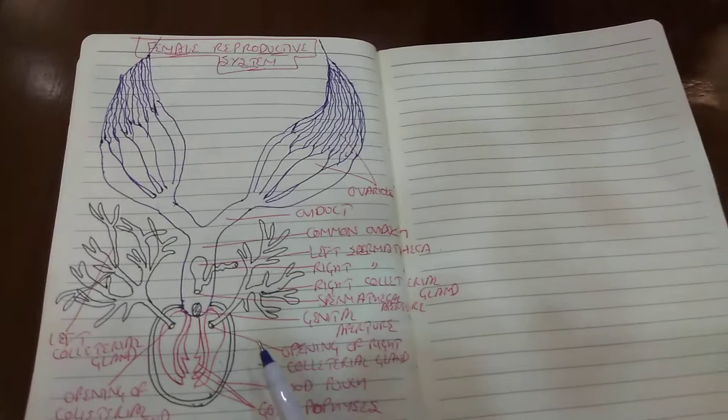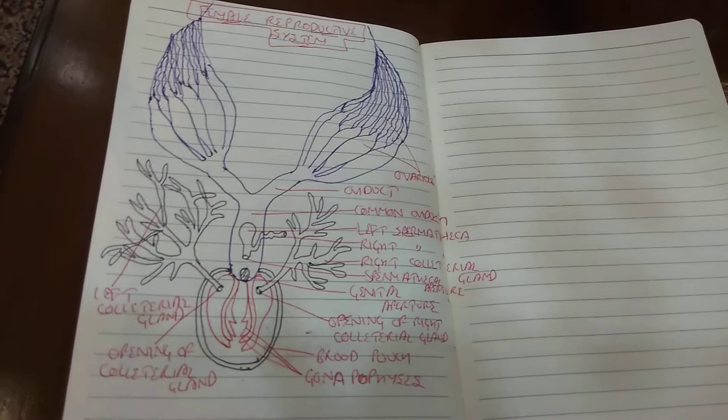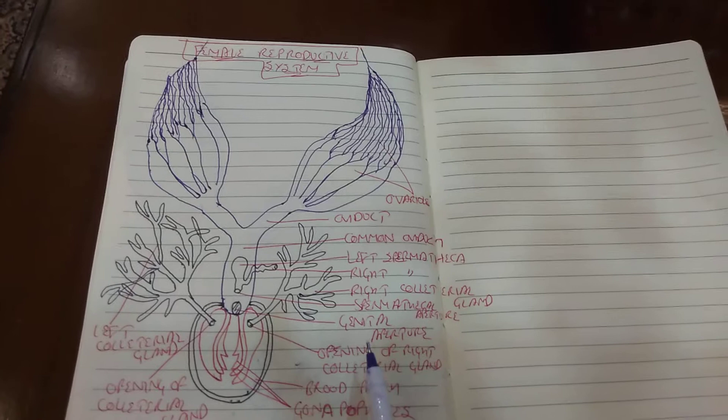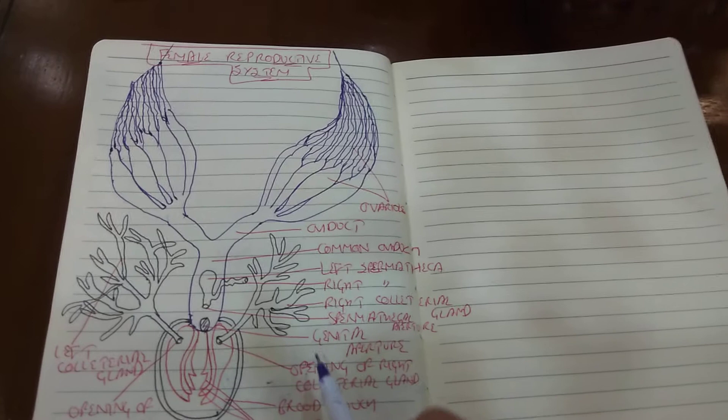The ootheca remains attached to the female external genitalia until a safer place is found. Once it is produced out completely, it is left at a very safe place. The female then separates the ootheca from its body.